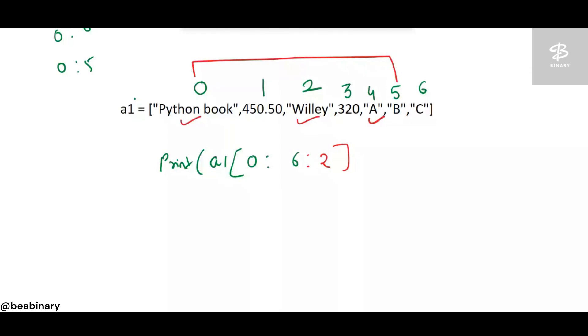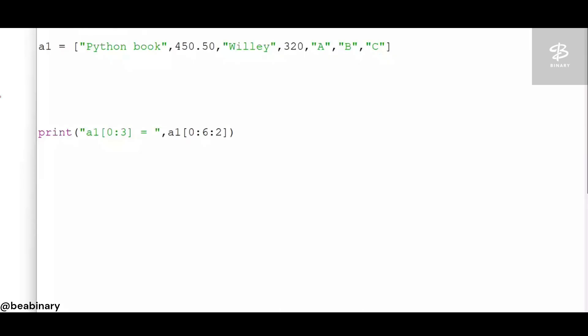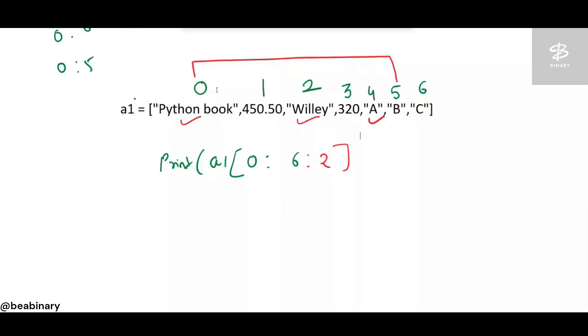I will remove the other statement and run that particular program. So python book, willy, and a, that's what I already explained. Python, willy, and a - mark the tick mark which gets printed. So how many positions, you know, just a variation is there.